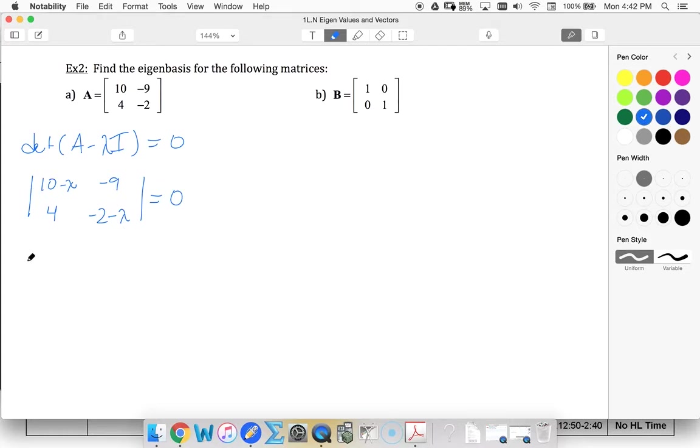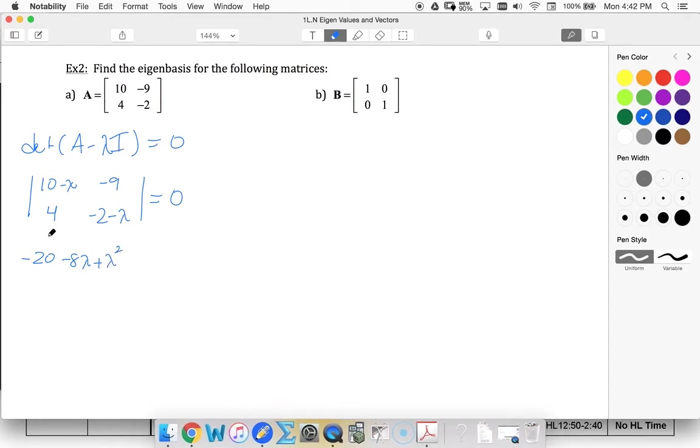Multiplying these out I'll have negative 20 minus 10 lambda plus 2 lambda minus negative 36, plus 36 is 0.